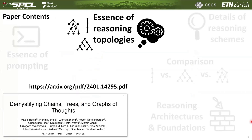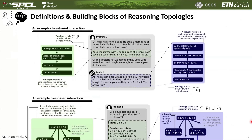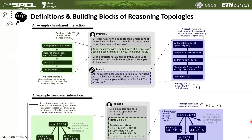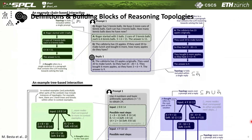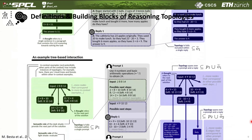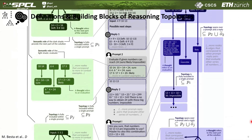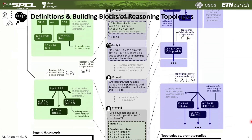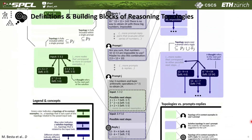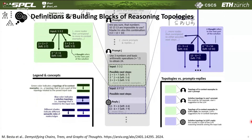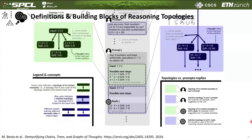After that, we take a similar look at the reasoning topologies, namely structure-enhanced prompting. Here we provide both the definitions and the functional formulation in the context of reasoning topologies. Then we support it with an example where we identify and illustrate different types of reasoning topologies within the context examples provided by the user, within the replies by the LLM, and some other interesting things.